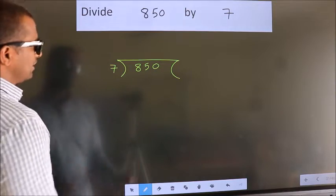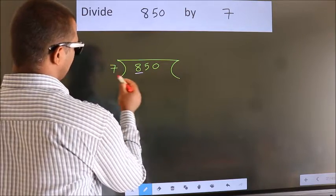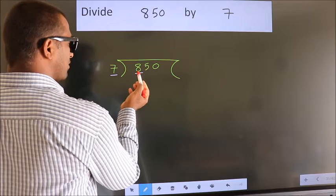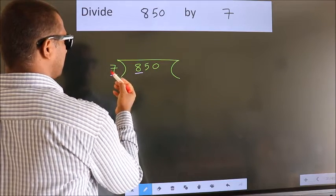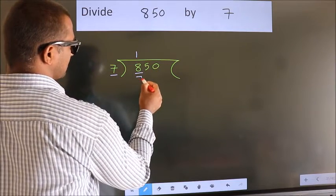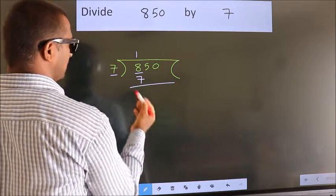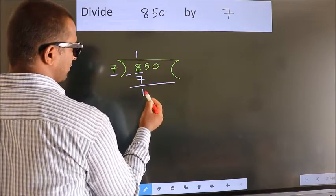Next. Here we have 8, here 7. A number close to 8 in 7 table is 7 once 7. Now we should subtract. We get 1.